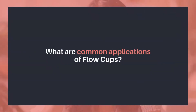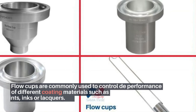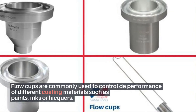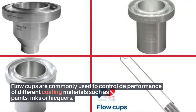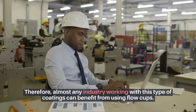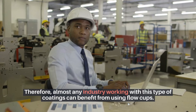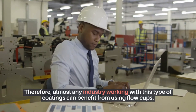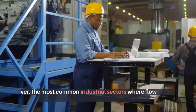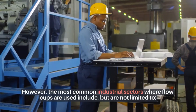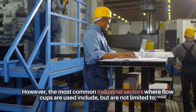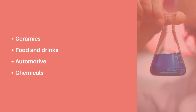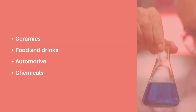What are common applications of flow cups? Flow cups are commonly used to control the performance of different coating materials such as paints, inks, or lacquers. Therefore, almost any industry working with this type of coatings can benefit from using flow cups. However, the most common industrial sectors include but are not limited to ceramics, food and drinks, automotive, and chemicals.